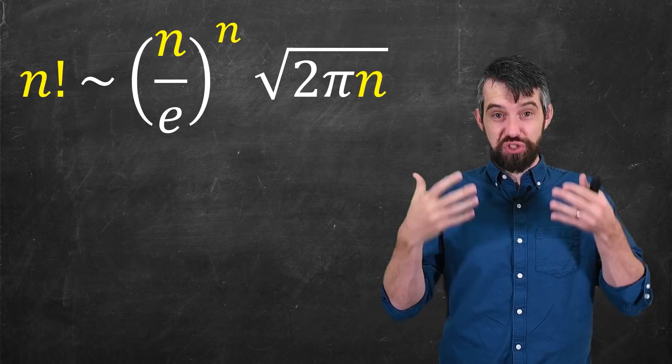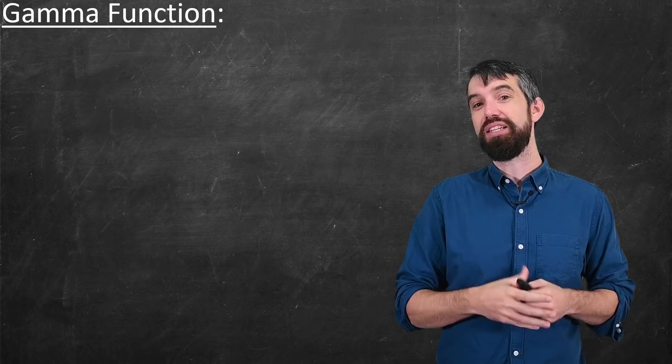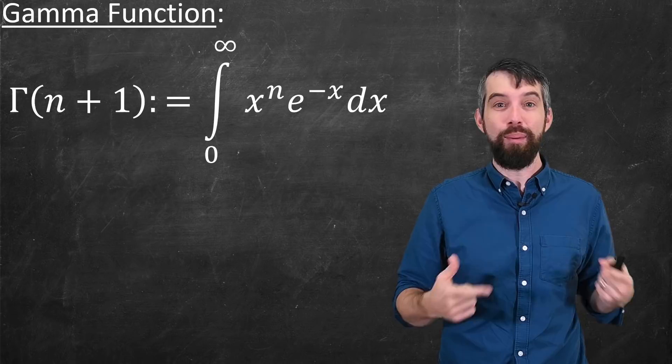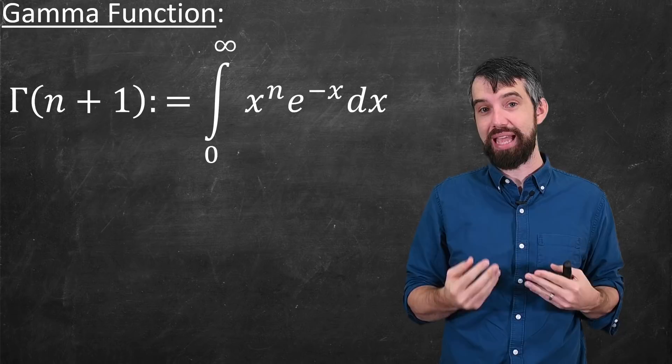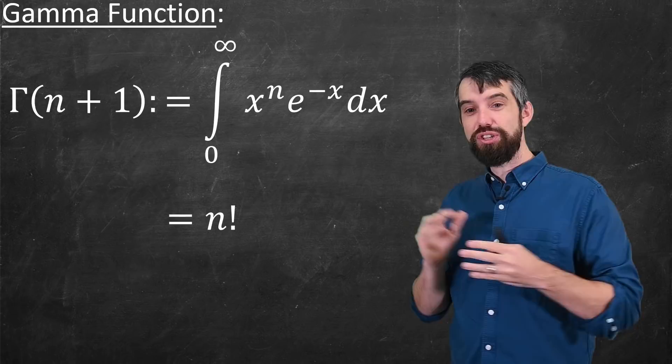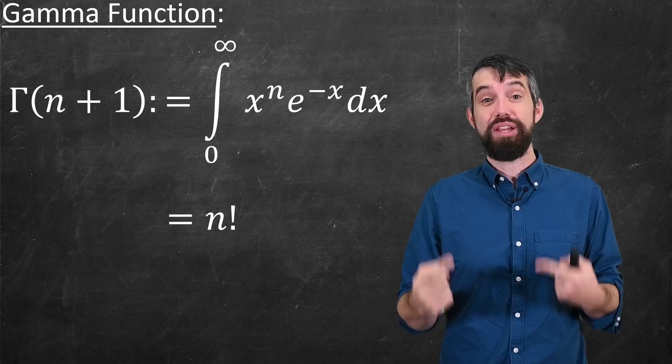And the first ingredient is called the gamma function. The gamma function is defined to be Γ(n+1) equals the integral from 0 to infinity of x^n e^(-x) dx. And what's really nice about this gamma function is that if n is a natural number, then the output of this integral is just n factorial.